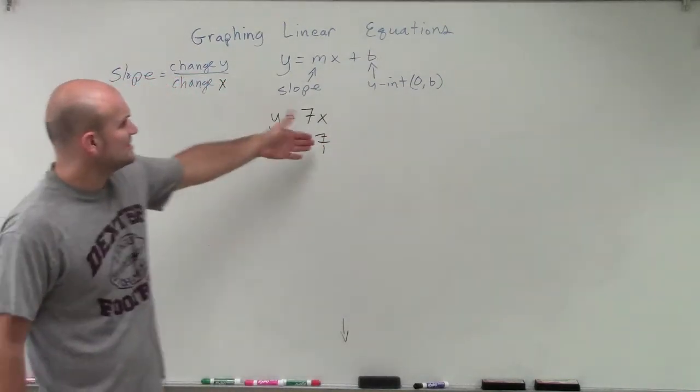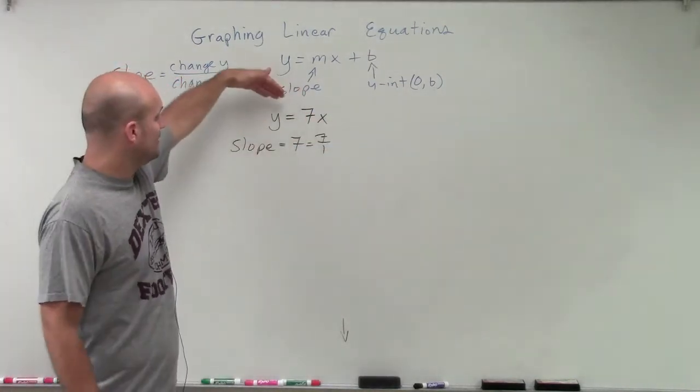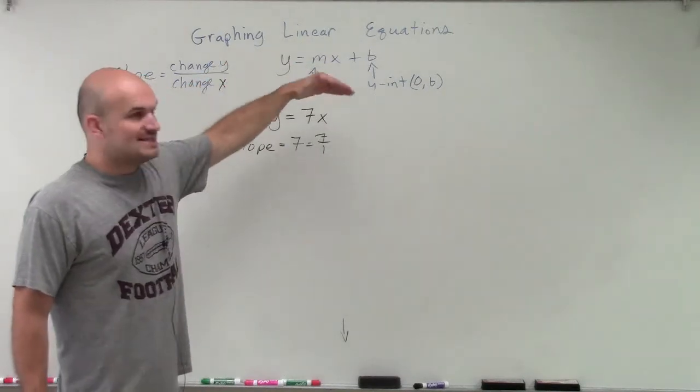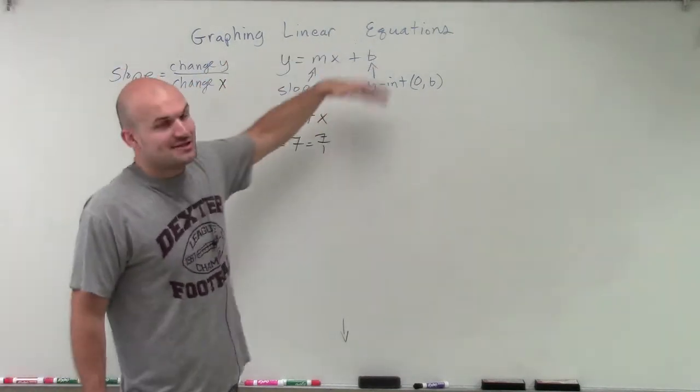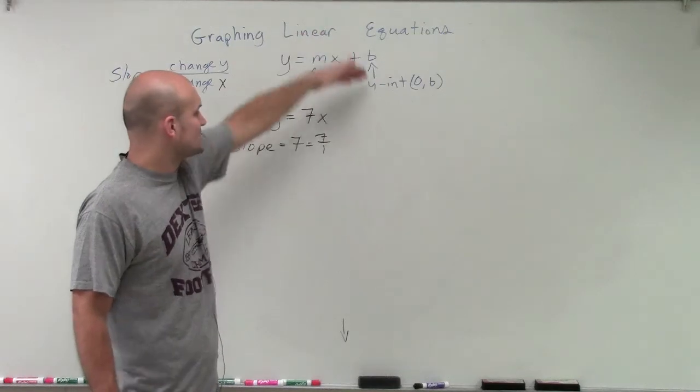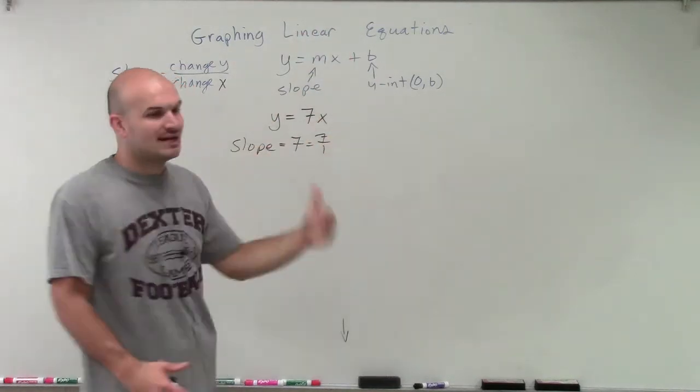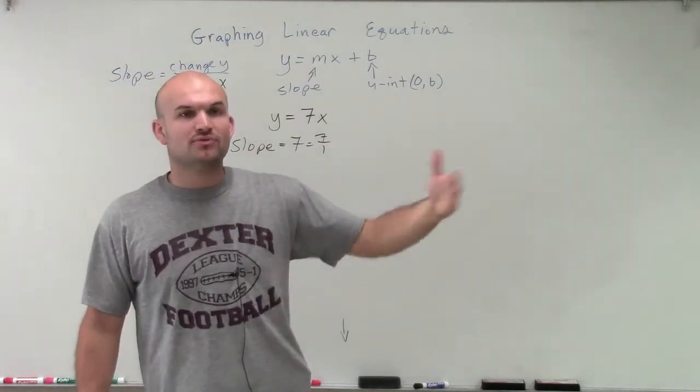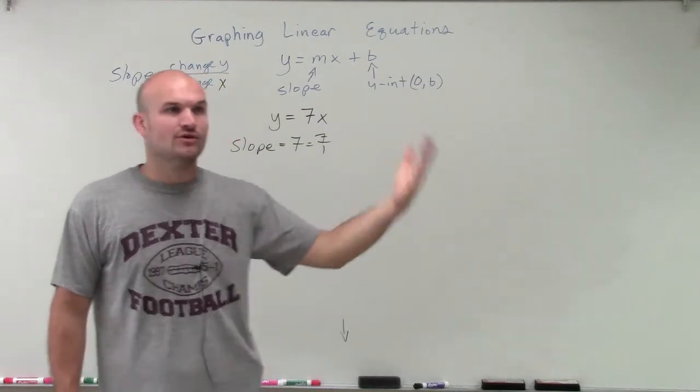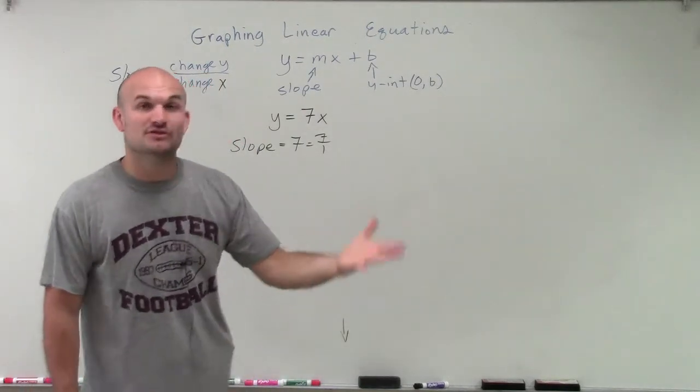But now I have a problem - I don't see a y-intercept. If I don't see something, and remember, it's always plus your y-intercept. So if I'm adding something that's not going to change this answer, what can I add to something like 1 plus what is still going to equal 1? The only answer that we can have is going to be 0.